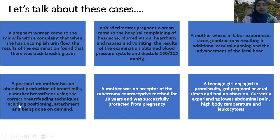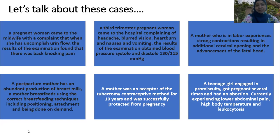The fourth case: a postpartum mother has abundant breast milk production. The mother breastfeeds using the correct technique, including proper positioning, attachment, and feeding on demand. This is also a physiological condition — correct positioning, proper attachment, and on-demand feeding will make breast milk production abundant.